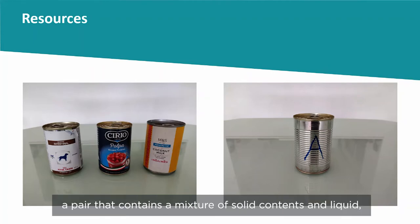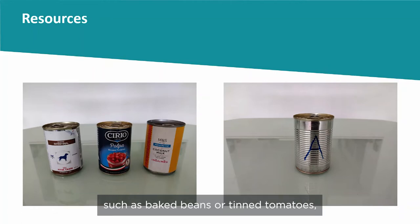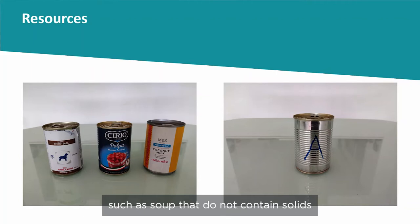You also need a pair that contains a mixture of solid contents and liquid, such as baked beans or tinned tomatoes, and a pair that contains purely liquid contents such as soup that does not contain any solids.